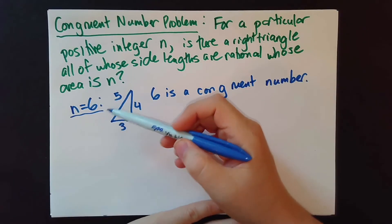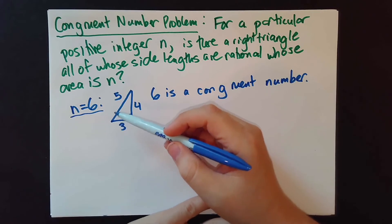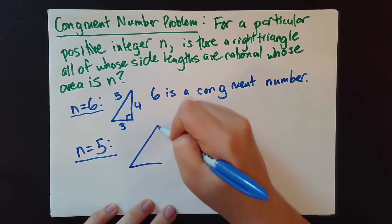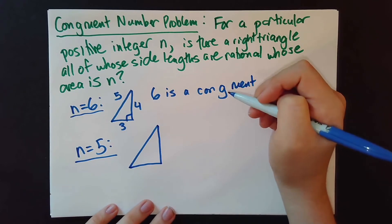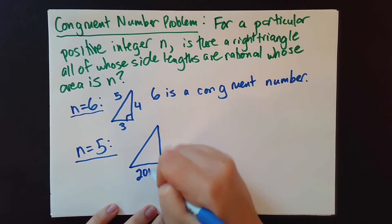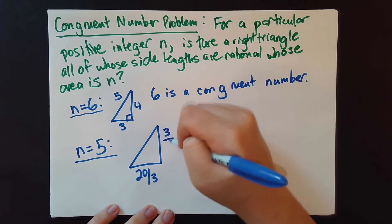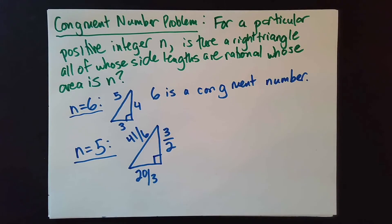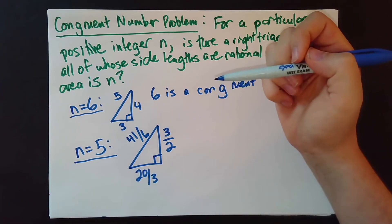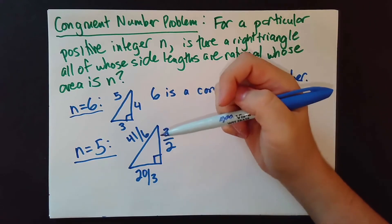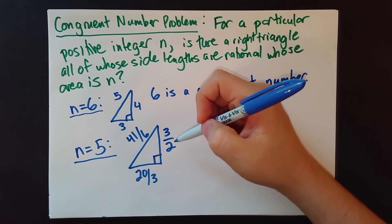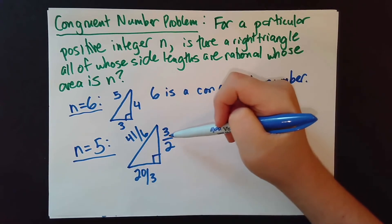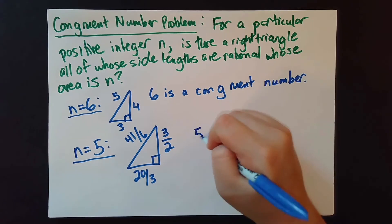This example makes the problem look nicer than it actually is. If I ask you whether 5 is a congruent number, you might think through the right triangles you know and not find one. But that's just because you've never thought about the triangle with side lengths 20/3, 3/2, and 41/6. To verify it's a right triangle, you check (20/3)² + (3/2)² = (41/6)². And to verify the area is 5, compute ½ × (20/3) × (3/2) = 5.